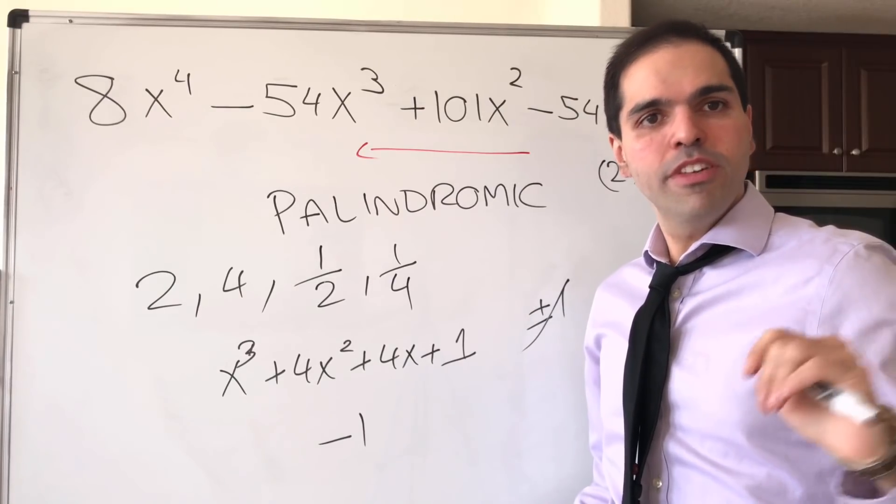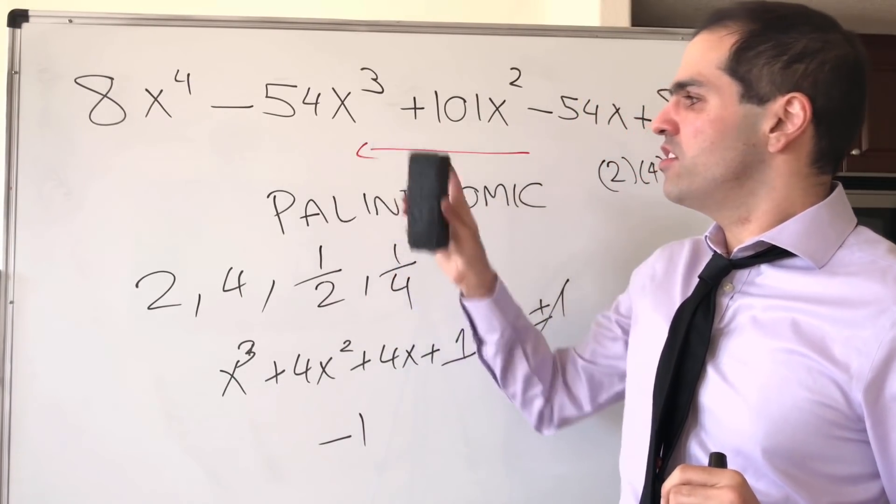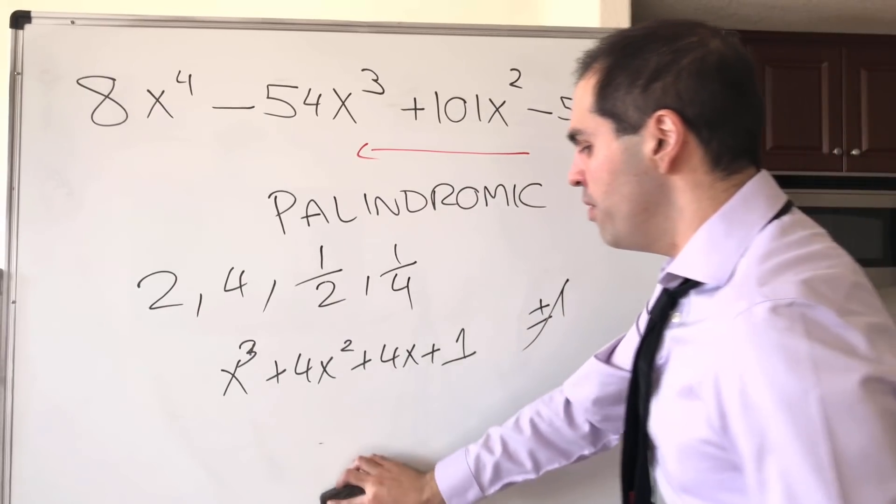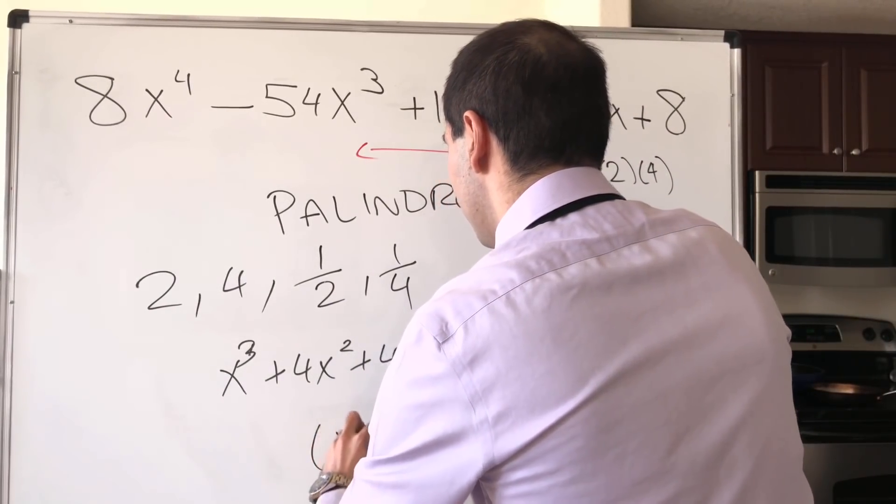And last but not least, before I move on to the proof, there is a very famous palindromic polynomial, which is simply x plus 1 to the n.